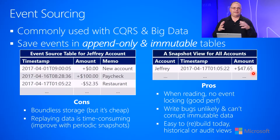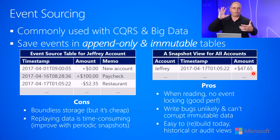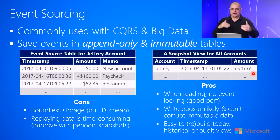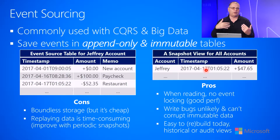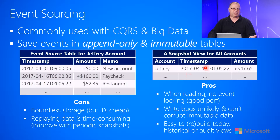This is the idea of event sourcing. It's this table on the left that grows — we keep adding more and more entries in this append-only fashion, and each entry is immutable. If we want to do other calculations on it, we have this view. You can also see how easily this fits in with CQRS: these are the commands coming in, and this is the view that's being updated so that we're ready to return back queries.